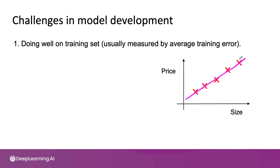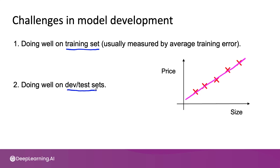After you've done well on the training set, you then have to ask if your algorithm does well on the development set or the holdout cross-validation set, and then also the test set. If your algorithm isn't even doing well on the training set, it's very unlikely to do well on the dev set or the test set. So step one is a milestone you must achieve on your way toward step two.